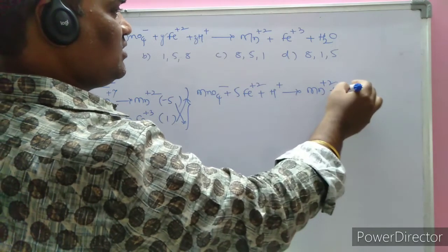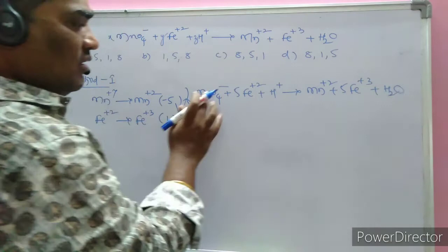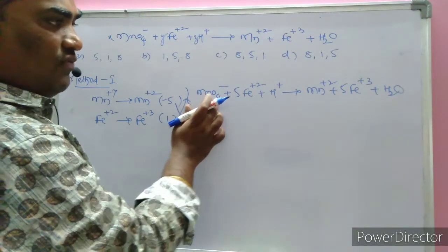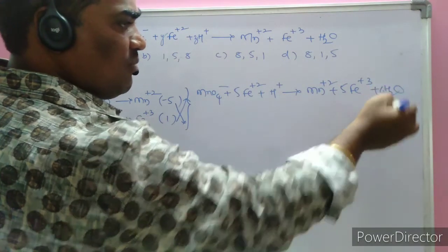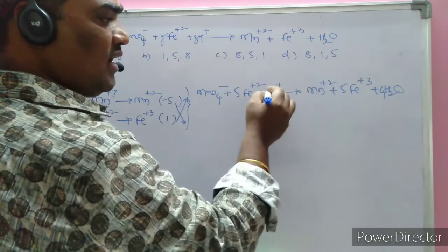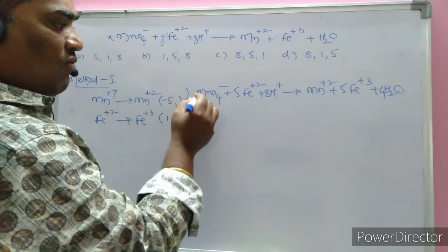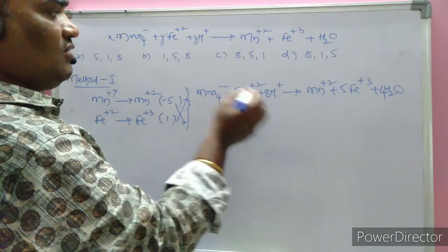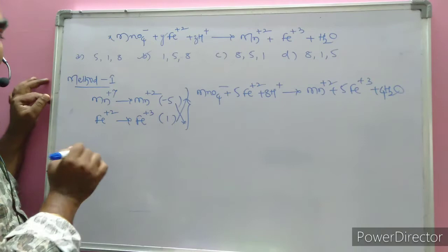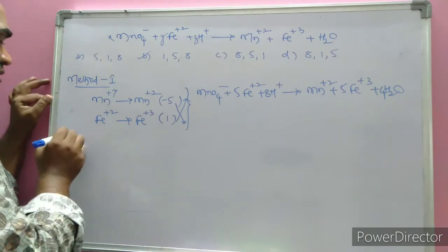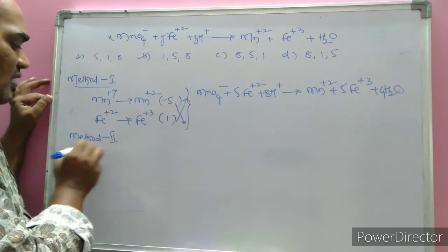Leaving H⁺ for now: 1 MnO4⁻ plus 5 Fe²⁺ gives 1 Mn²⁺ plus 5 Fe³⁺ plus H2O. The number of oxygens on the left is 4, and on the right is zero, so multiply by 4 — giving 4 H2O on the right and 8 H⁺ on the left. The coefficients present are 1, 5, 8. So option B is the right answer, using Method 1.